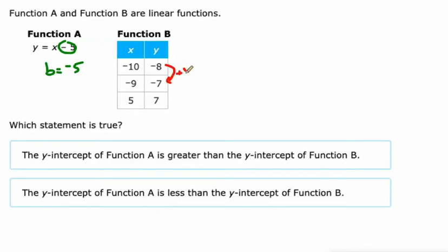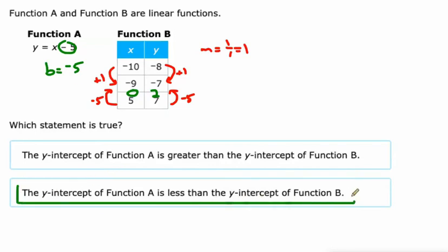So here's an increase of 1. Here's an increase of 1. That means the slope is 1 over 1, or 1. So if we go backwards 5, from 5 to 0, we're going to have to go backwards 5 here, because negative 5 divided by negative 5 is 1. And that's going to get us to 2 for the B value there. So 2 is greater than negative 5, so the Y-intercept of A is less than the Y-intercept of function B.